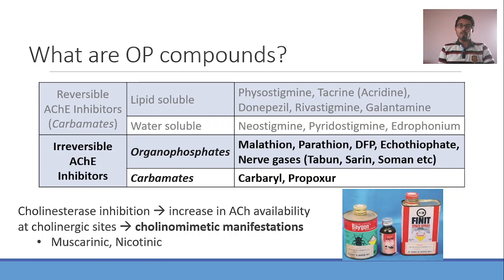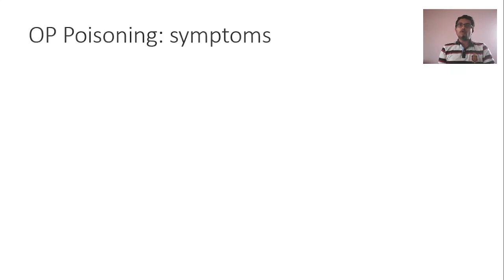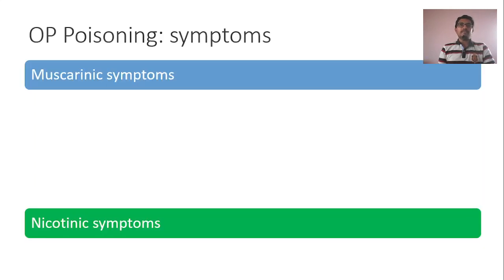All the manifestations of OP compound poisoning are similar to parasympathetic activation. We can divide them into muscarinic symptoms and nicotinic symptoms. There are three types of muscarinic receptors: M1, M2, and M3. M1 receptors are located in the CNS, M2 in the heart, and M3 is located around glands and smooth muscles.